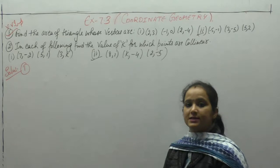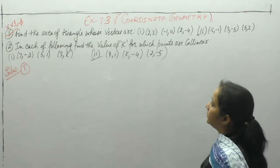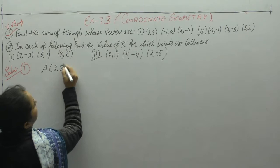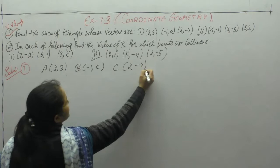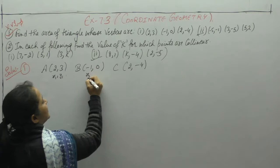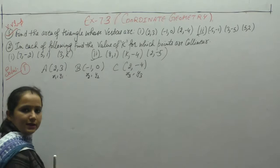Now we are going to start next exercise 7.3 of area. Find the area of triangle whose vertices are (2, 3), (-1, 0), and (2, -4). These vertices are x1, y1, x2, y2, x3, y3.